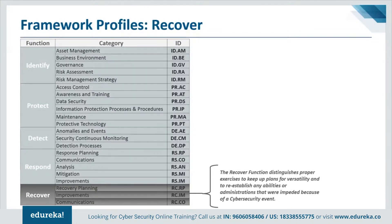These five functions were selected because they represent the five primary pillars for a successful and holistic cybersecurity program. They aid organizations in easily expressing their management of cybersecurity risk at a high level and enabling risk management decisions.